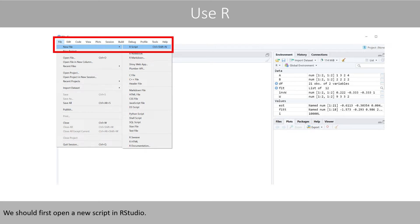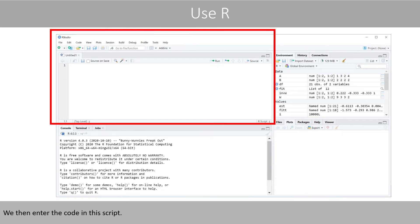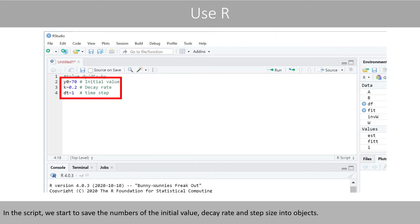Once you open RStudio, it will look something like this. We should first open a new script in RStudio. We then enter the code in the script. In the script, we start to save the numbers of the initial value, decay rate, and step size into objects.